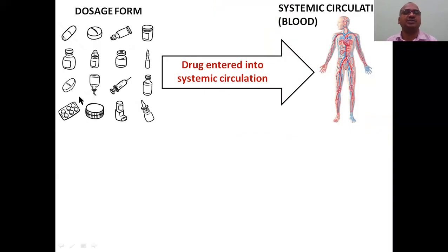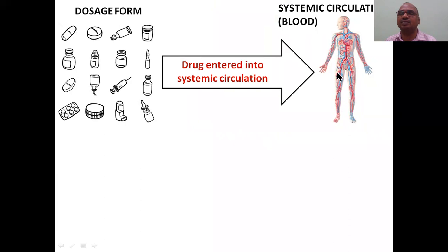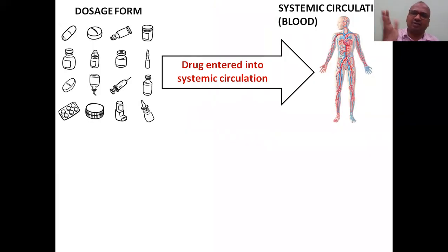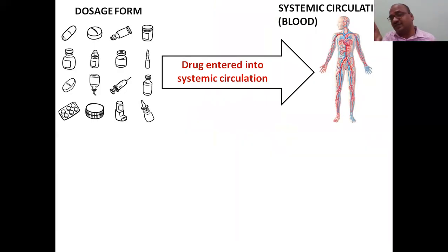These are all the dosage forms — ointment, injection, eye drops, tablets, patches, IV fluids, ampoules, vials. Now, this is the systemic circulation — the red and blue blood vessels. Drug enters into the systemic circulation only. If the drug is in the muscle or some other area, we are not considering that — only how much drug entered into the blood, the systemic circulation.